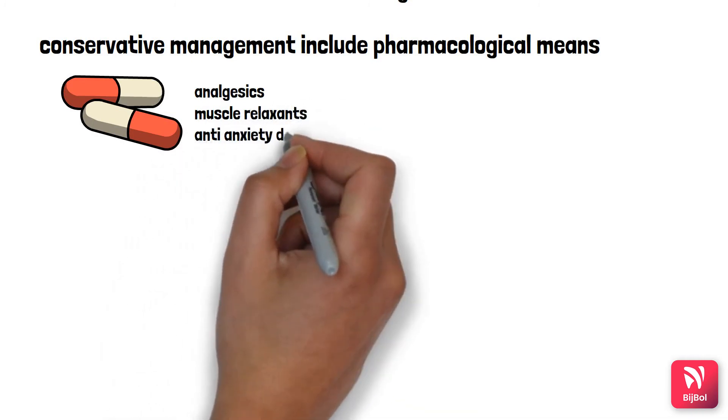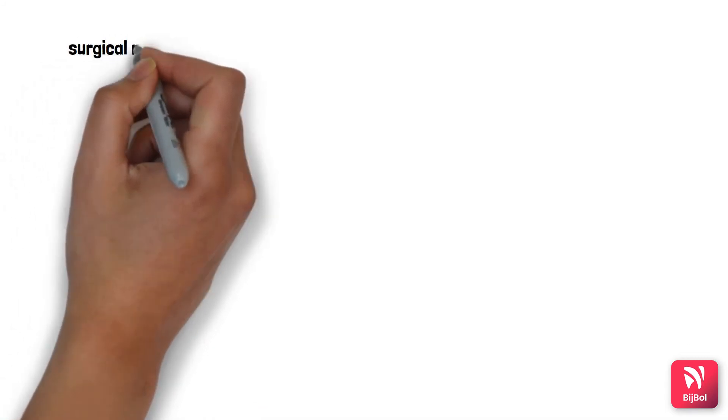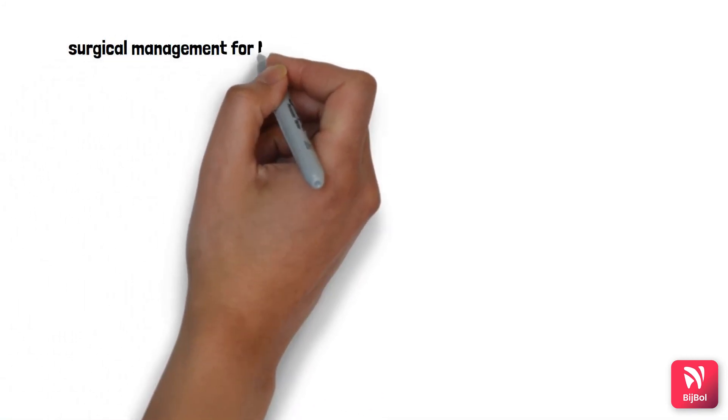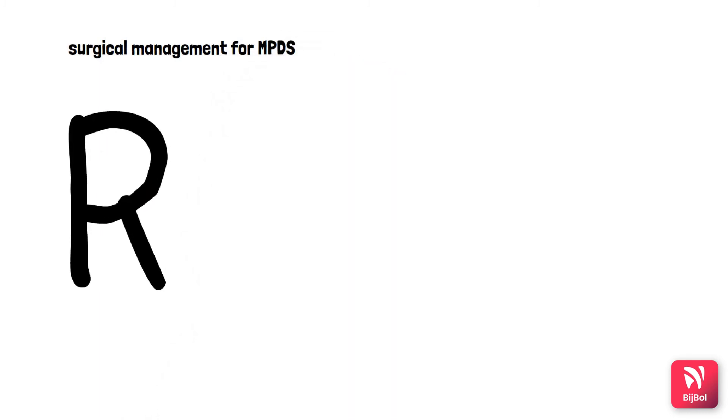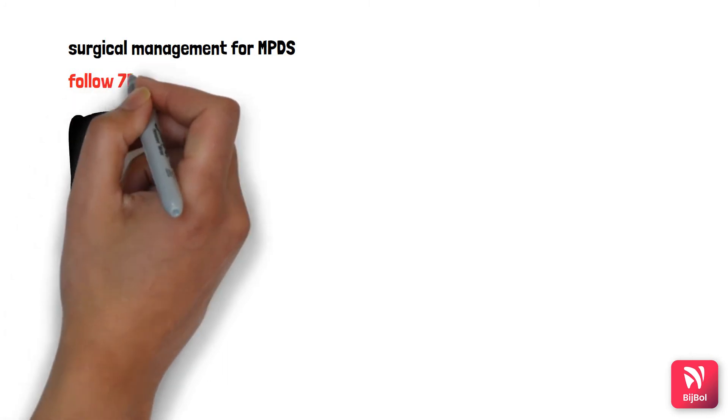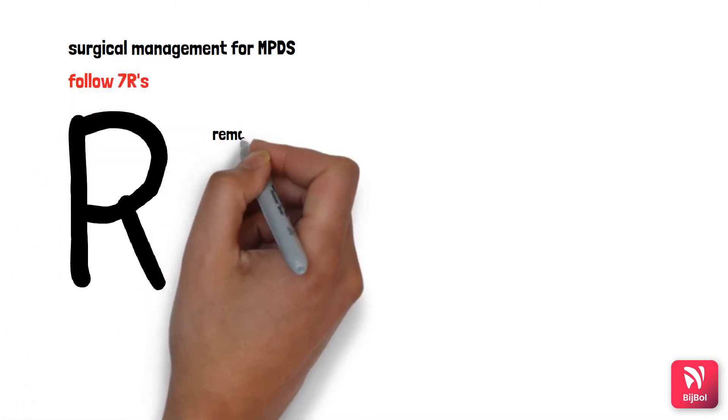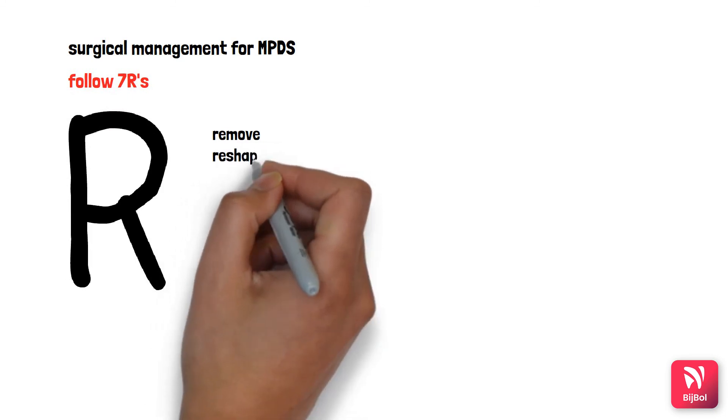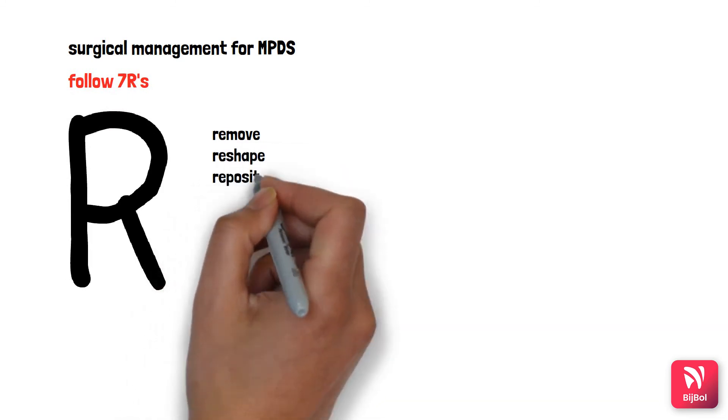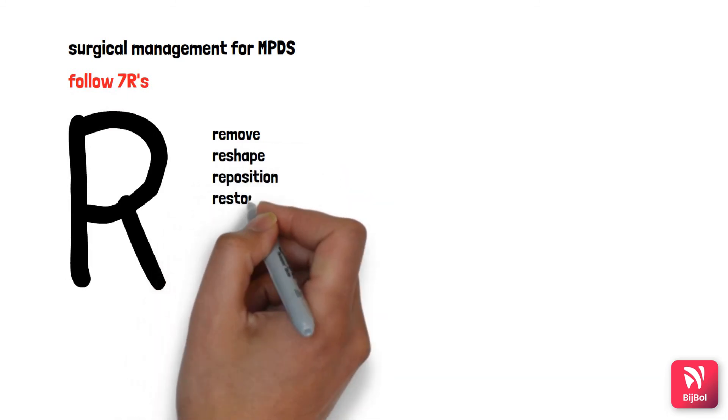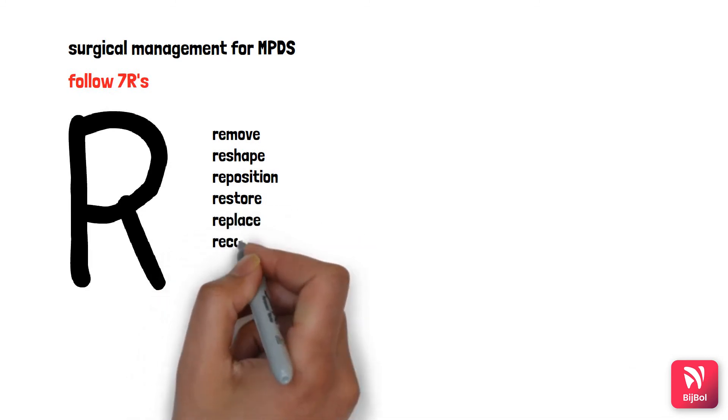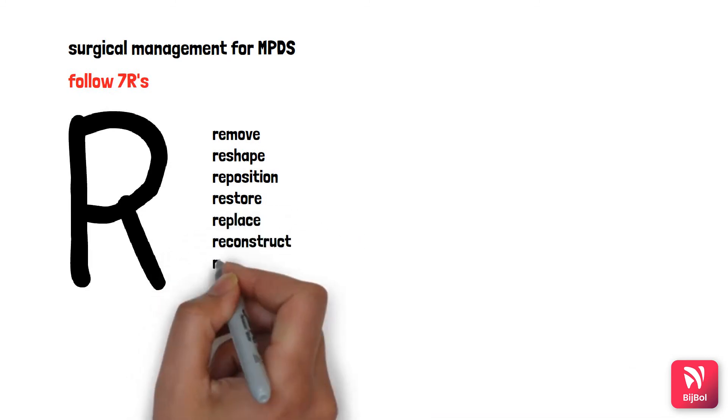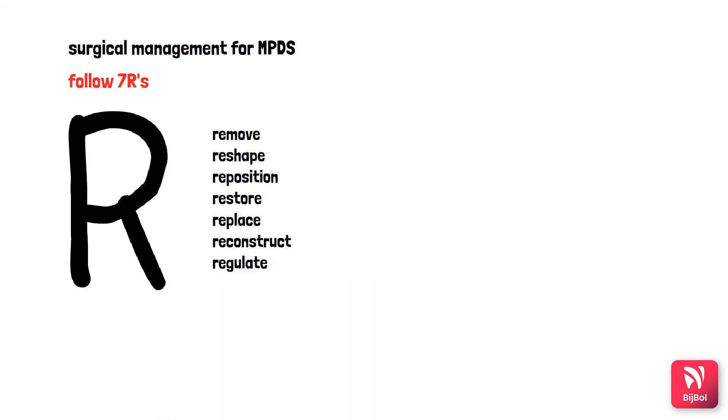includes the rule of seven. If there are supererupted teeth causing occlusal disturbance, you remove or reshape. If there's premature contact, reposition using orthodontic treatment. Restore and replace missing teeth, reconstruct the joint, and regulate if there are any habit problems.